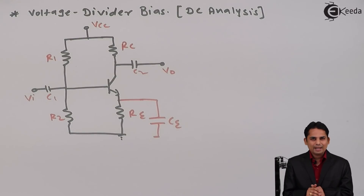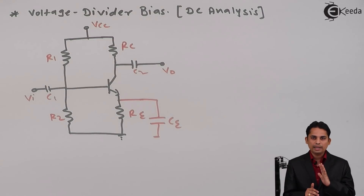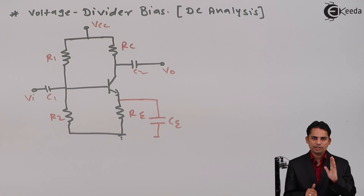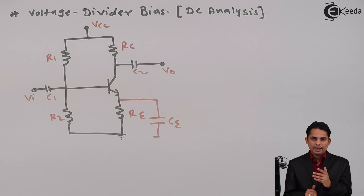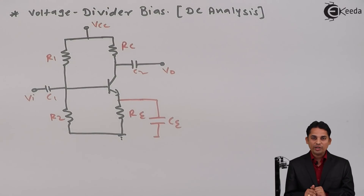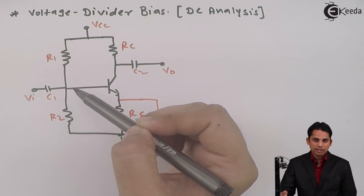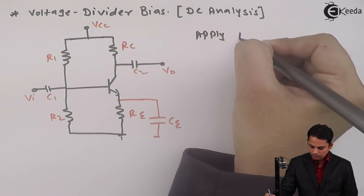We know different DC analysis theorems studied previously. One of the most important is Thevenin's theorem, which states that we can resolve any combination of resistors and voltage sources on any side of a circuit using just one resistor and one voltage source in series — called VTH. So we will apply Thevenin's theorem to resolve the base side.